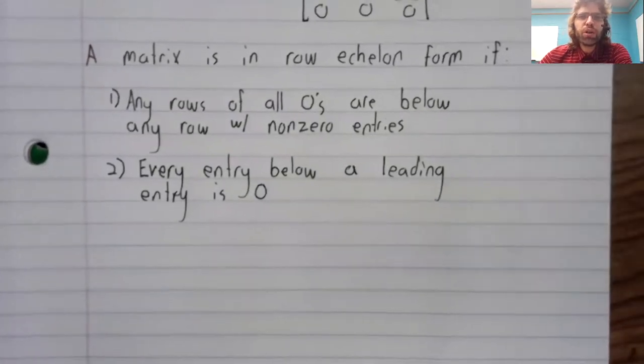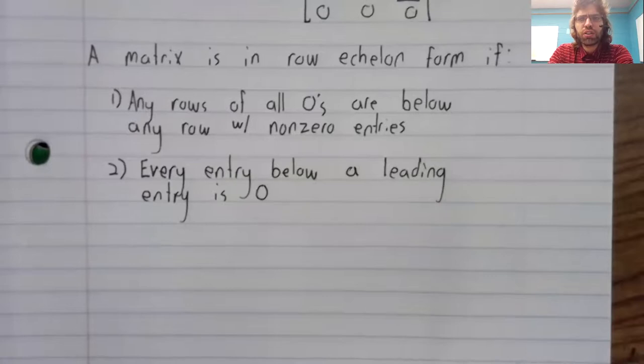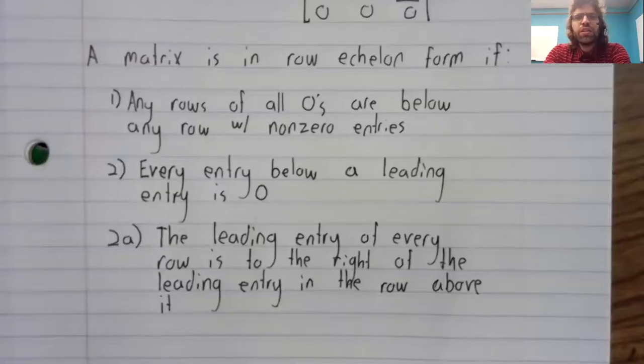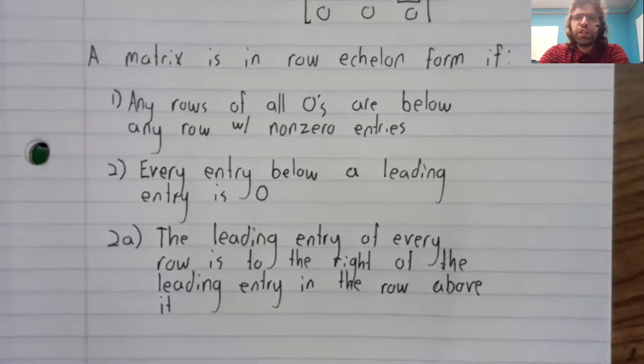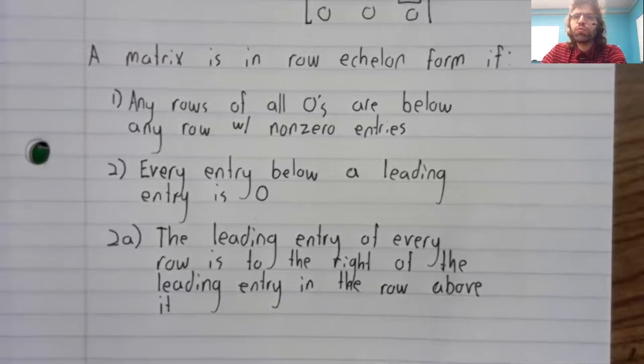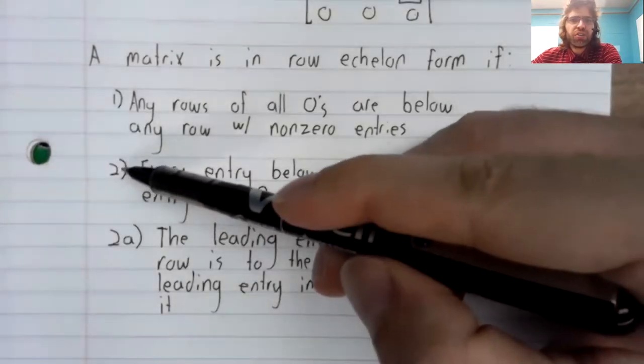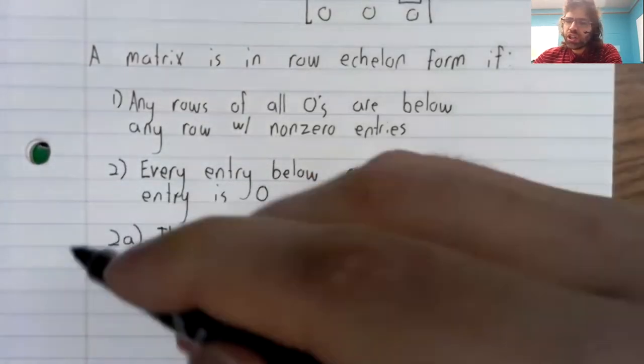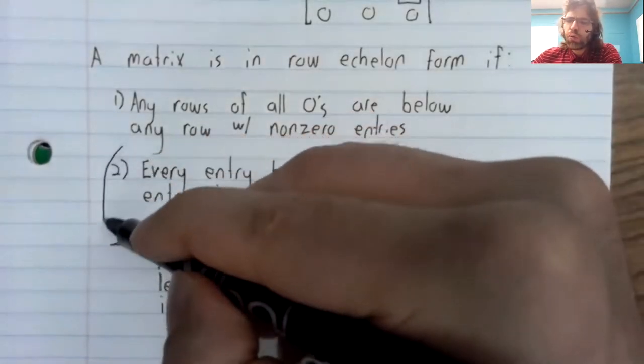Now, your textbook has a third condition: that the leading entry of every row is to the right of the leading entry in the row above it. But actually, this condition and this condition are equivalent.